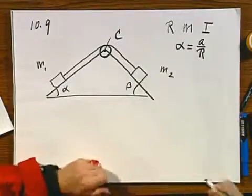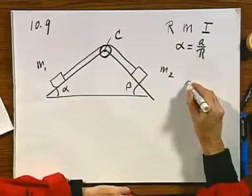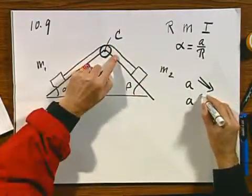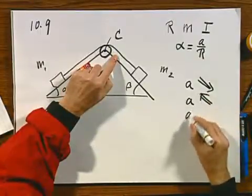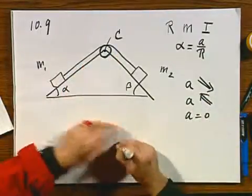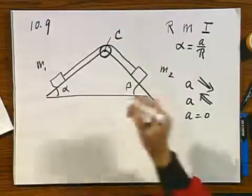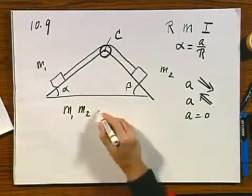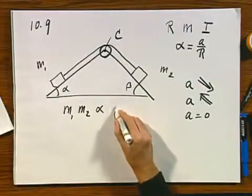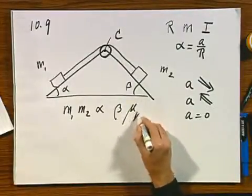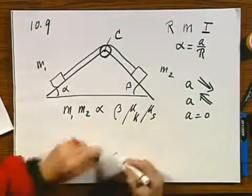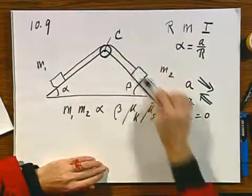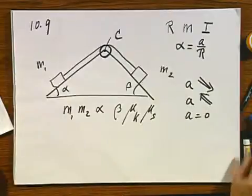Now I have three options, three possibilities. Either A on the right side is down, or A on the right side is up, or A is zero. And it is by no means obvious to predict what will happen. You will have to know M1, M2, alpha, beta, the kinetic friction coefficient, and the static friction coefficient to decide whether it will accelerate like this, or like this, or whether it will not accelerate at all.